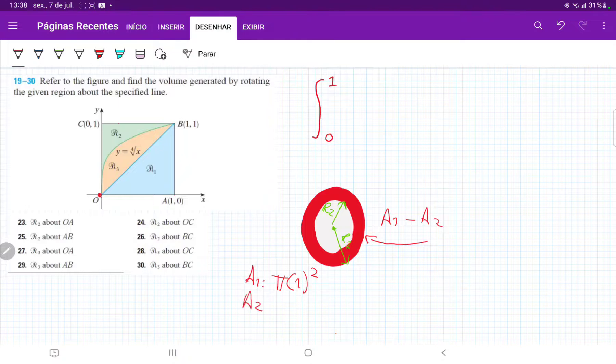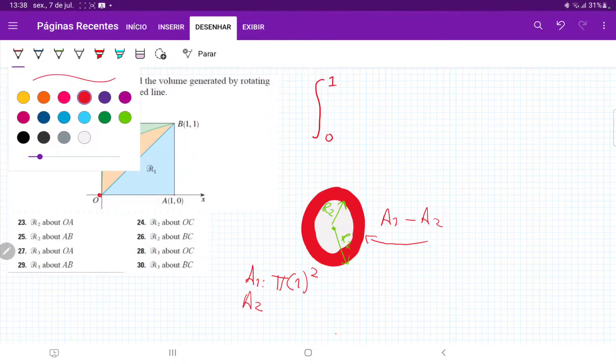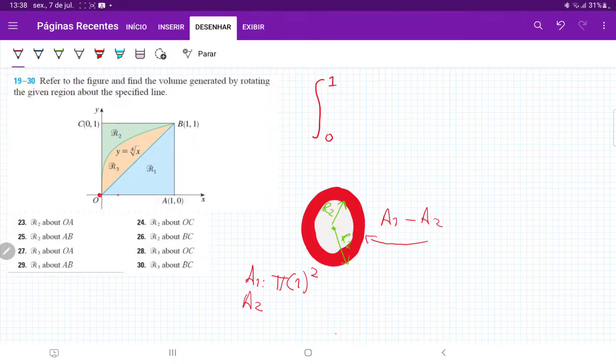And what about A2? Well, A2 is interesting because A2 is the radius that goes from here all the way out to here, right? So when we're revolving about OA, all we're saying is that radius is the size of the height of this function. So A2 is just pi times x to the one-fourth, right, fourth root squared.